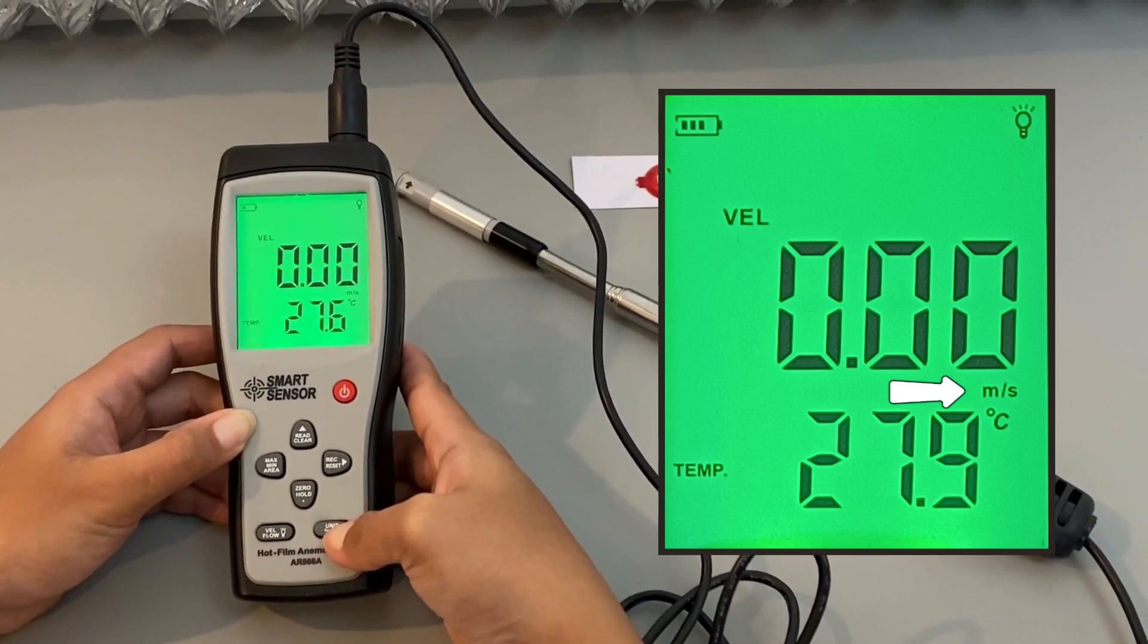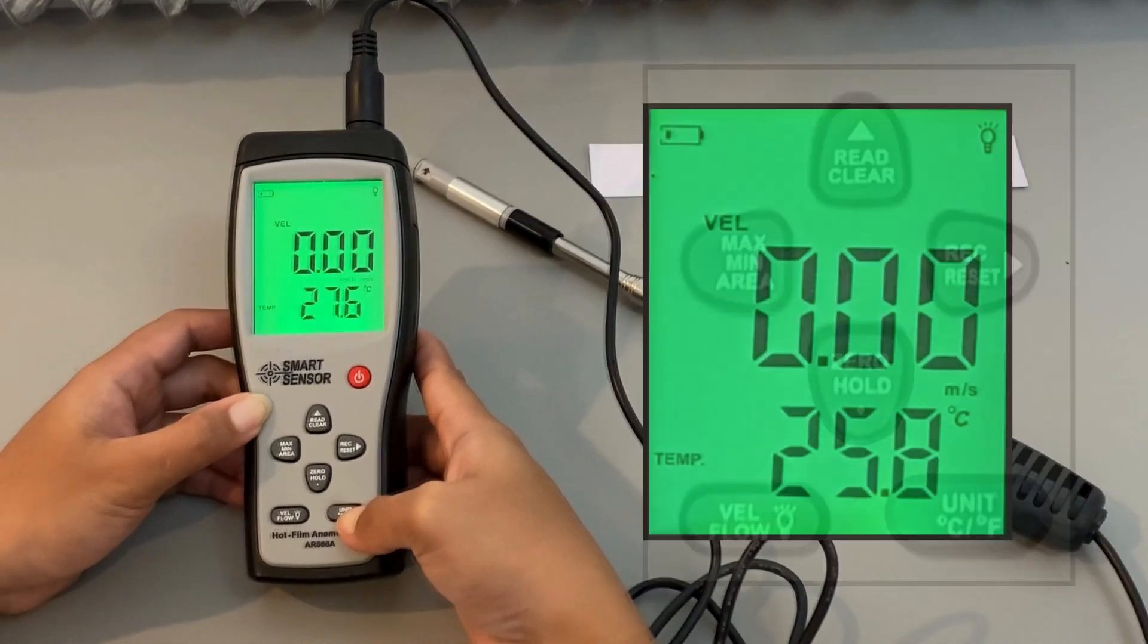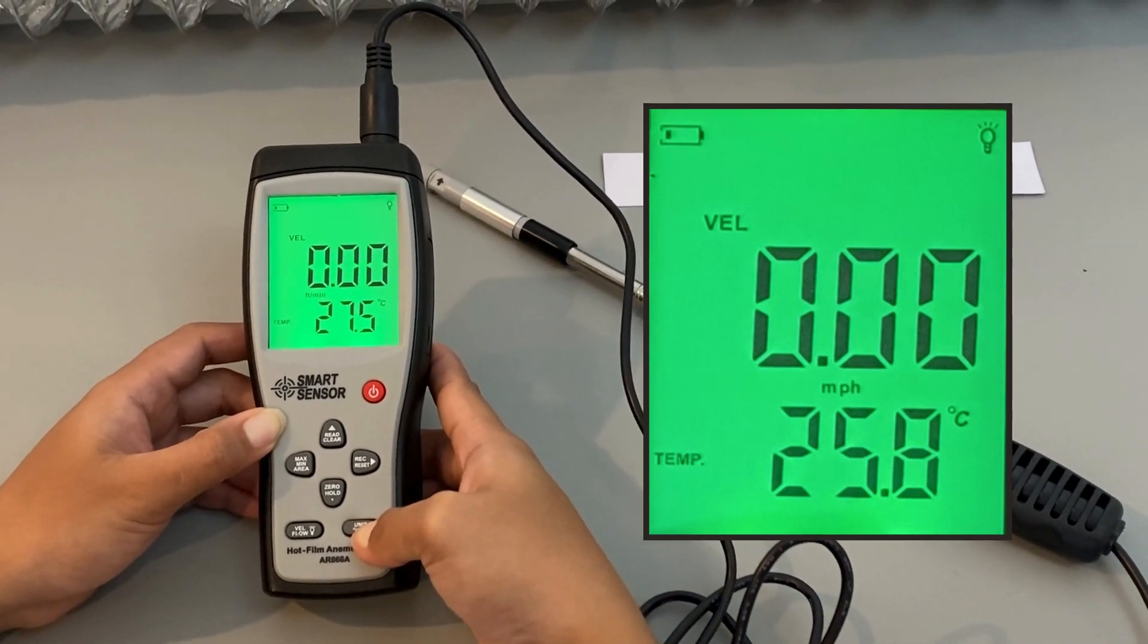To change the unit of measurement, press the unit button. You can select from several options such as meters per second, kilometers per hour, feet per minute, knots, or miles per hour.